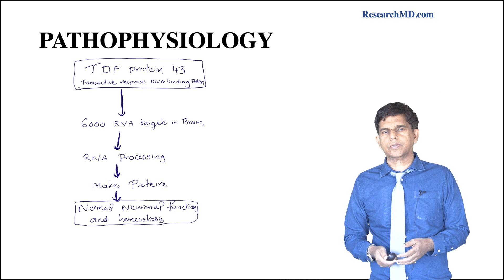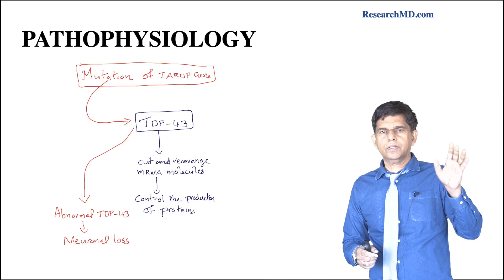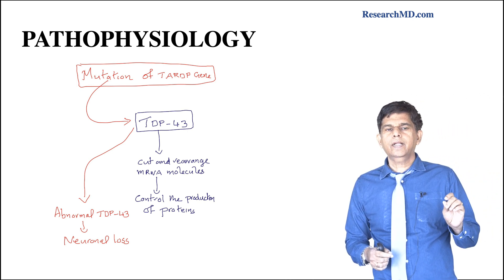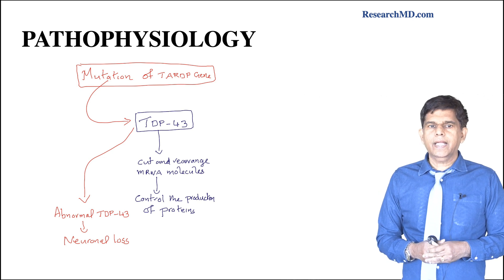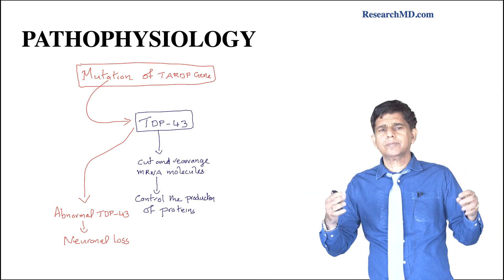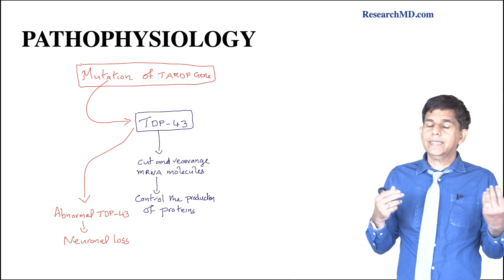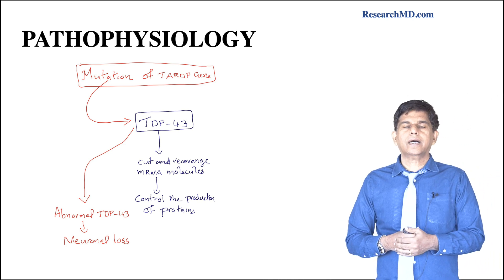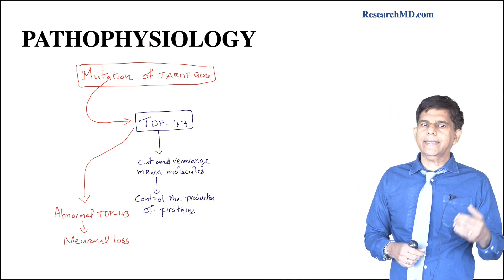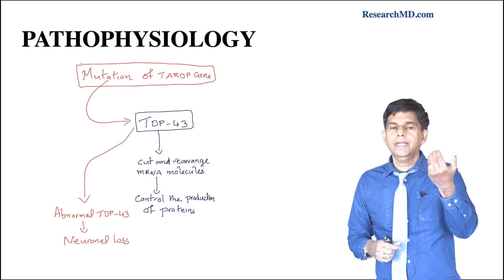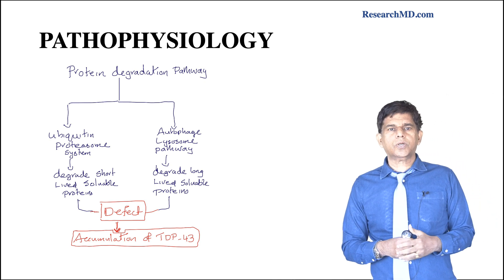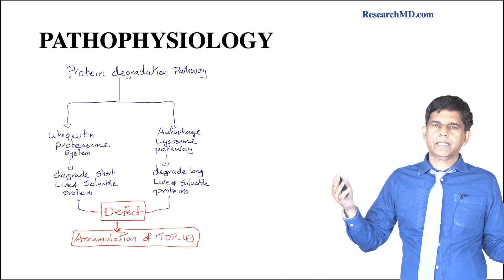From a genetic standpoint, there is a mutation in the TARDP gene that affects TDP-43, causing abnormal TDP-43. This leads to neuronal accumulation of TDP-43, neuronal loss, and disrupted neuronal homeostasis. The mutation in the TARDP gene and its effect on TDP-43 is a key part of the pathophysiology.